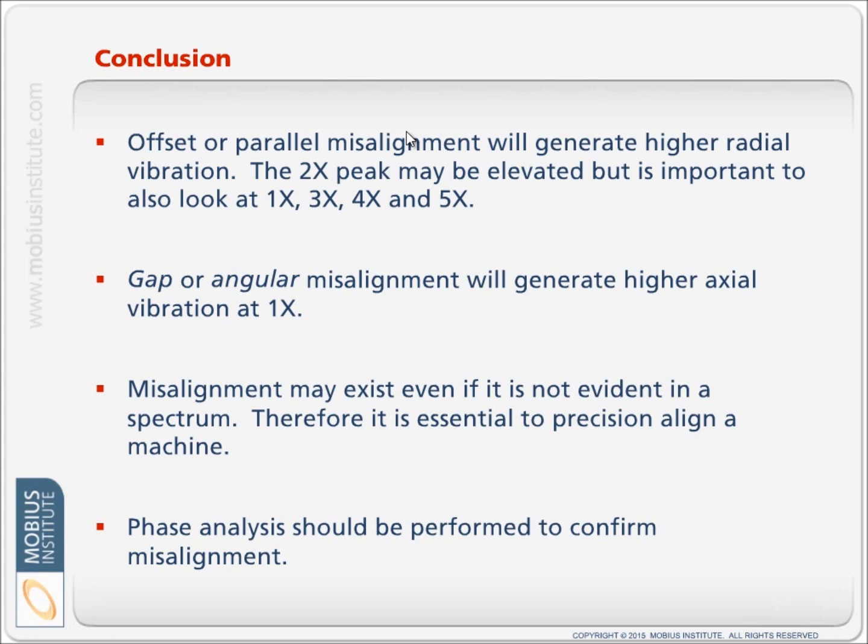Offset or parallel misalignment will generate higher radial vibration in the vertical and horizontal. The 2X peak may be elevated, as in it might go up in amplitude, but it is important to also look at the 1X, 3X, 4X, and 5X peaks.